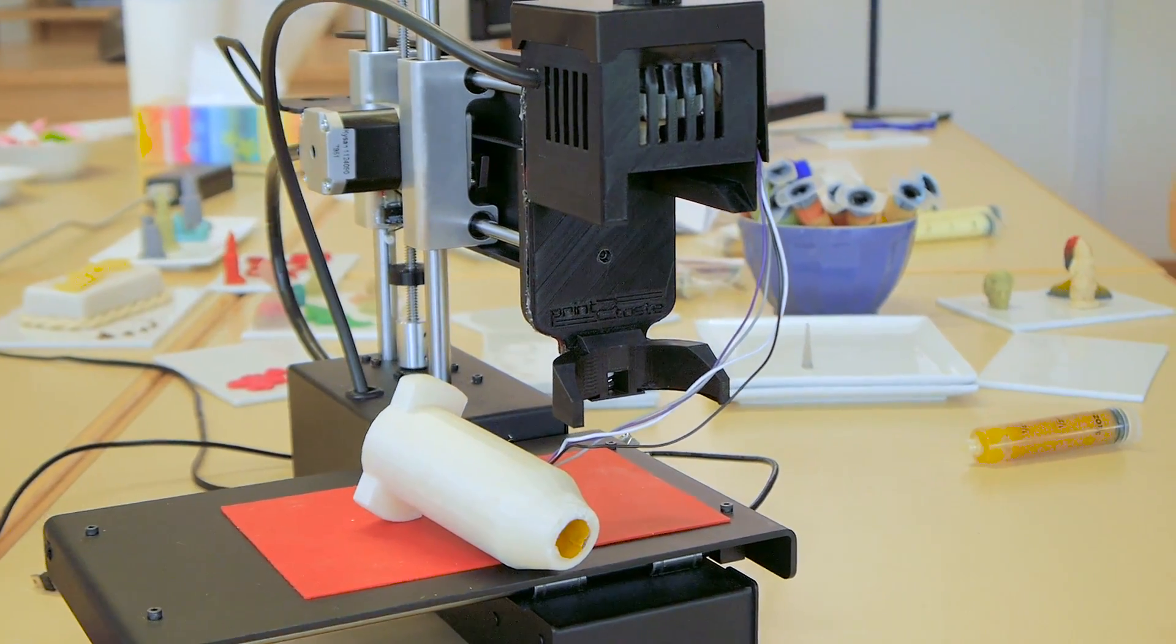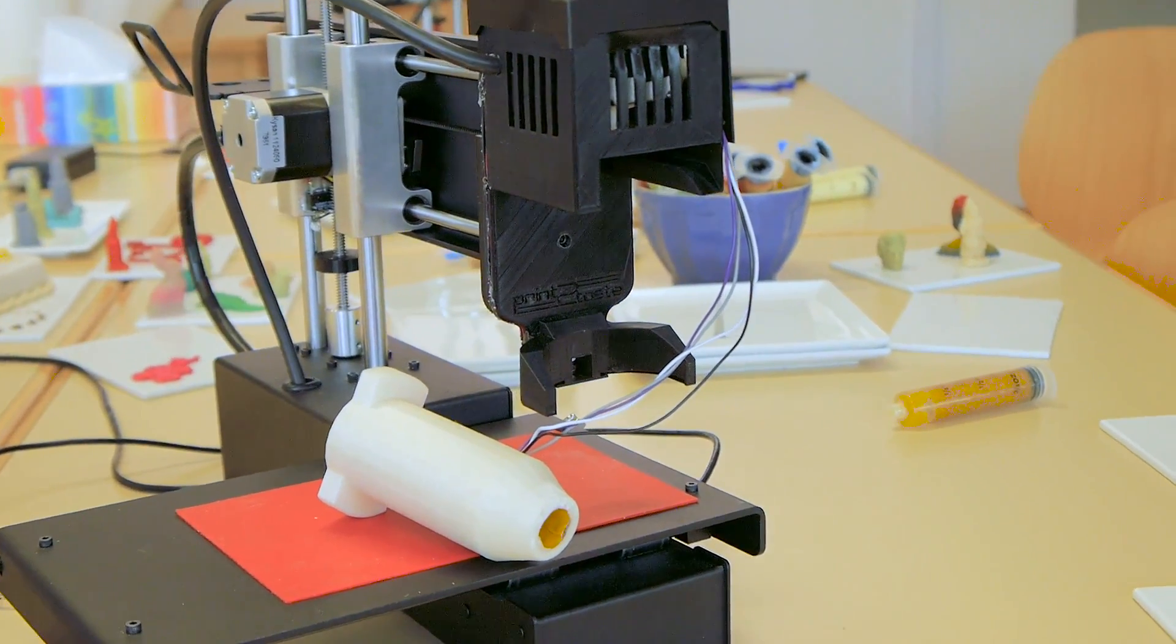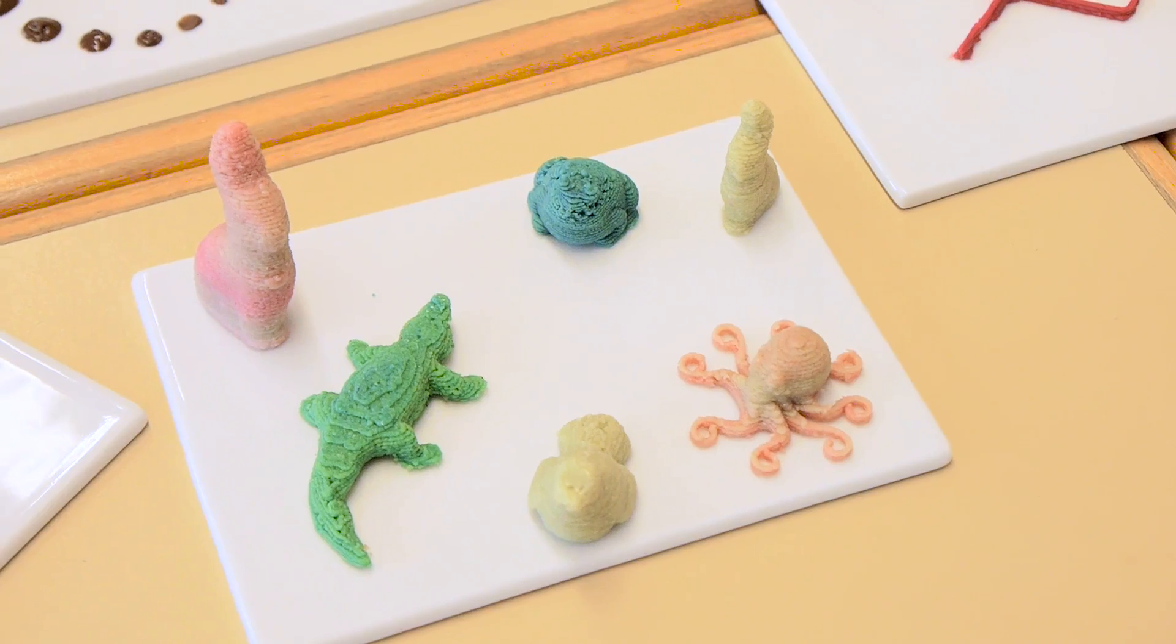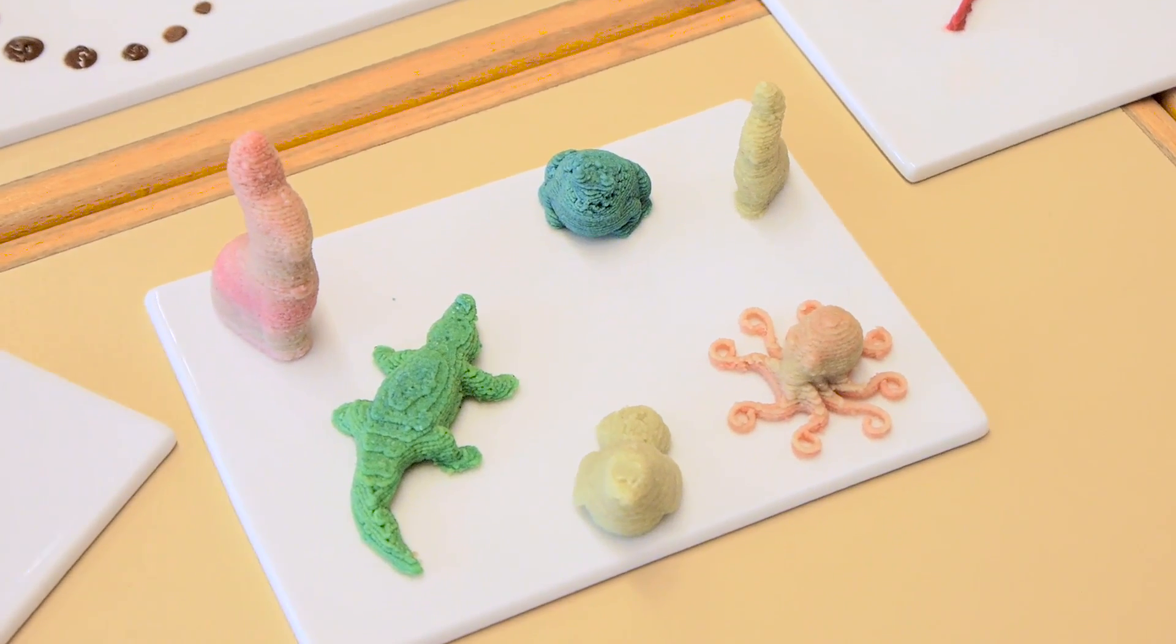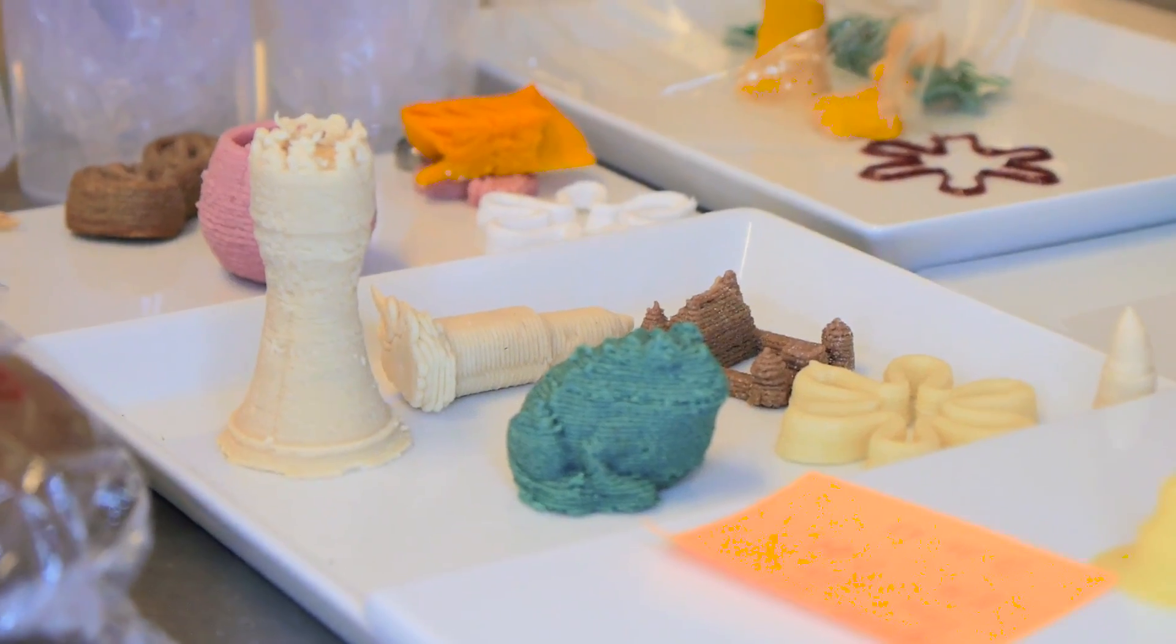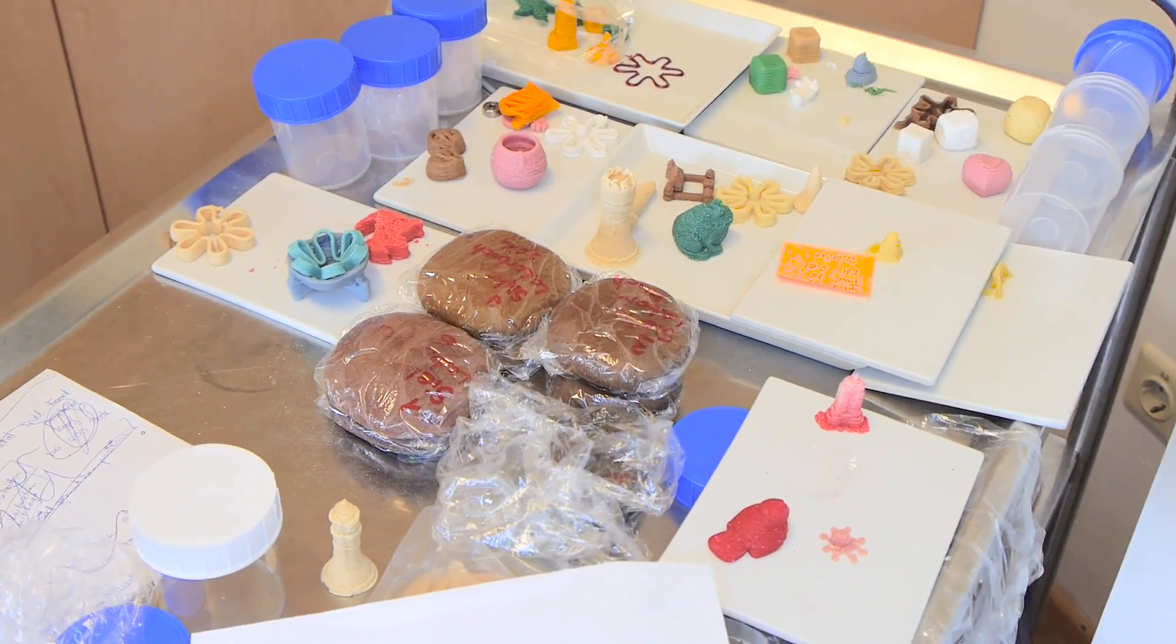You can basically print all kinds of materials, foods, which in one state have a fluid behavior like bakery products, marzipan, meringue stuff, jellies.